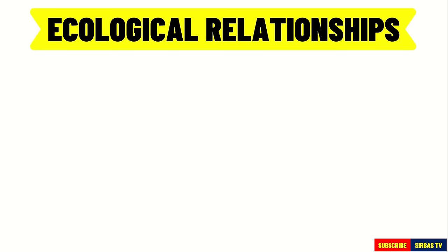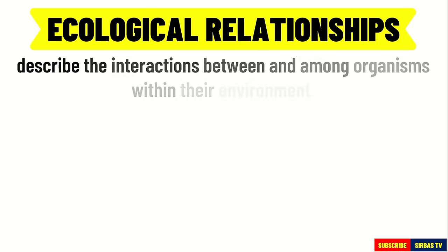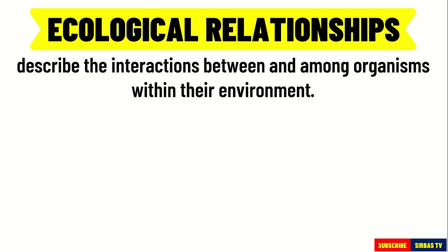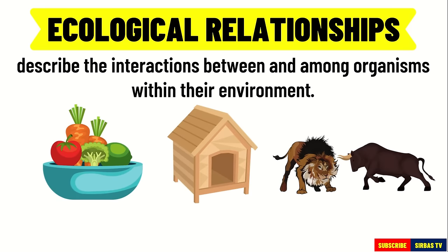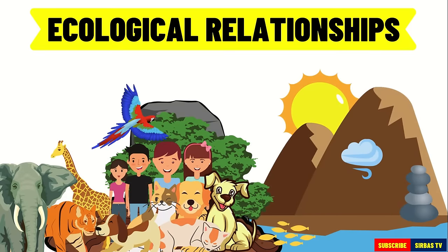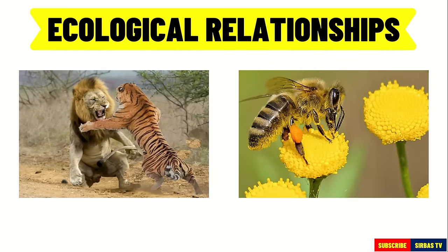Ecological relationships describe the interactions between and among organisms within their environment. Interactions and relationships exist in an ecosystem in search of food, shelter, and protection. In a community, interactions within and among the population may have important influences on the death and birth of the organisms and, in turn, on the population's growth and size.